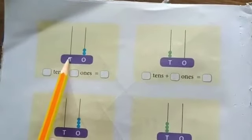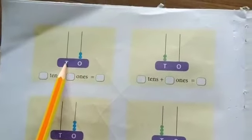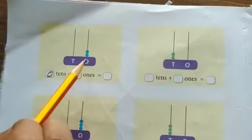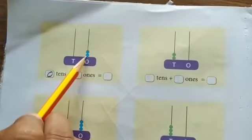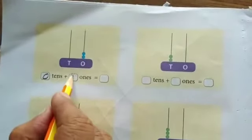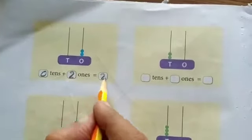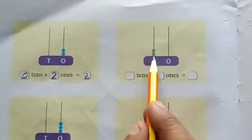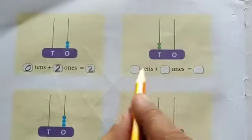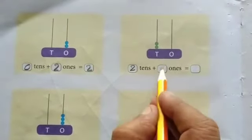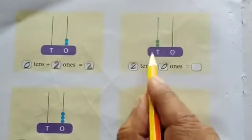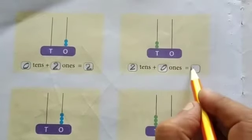How many tens are here? No tens — zero tens. How many ones? Two. Two ones is equal to two. Here, two tens and zero ones. Two tens means twenty.